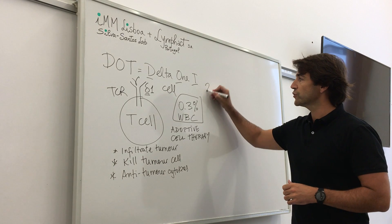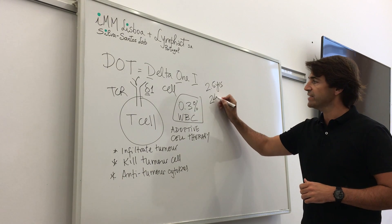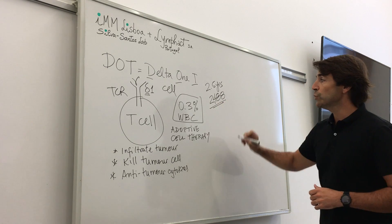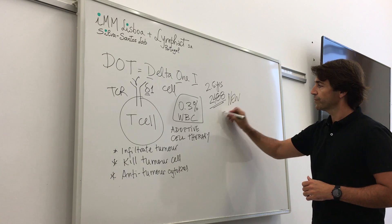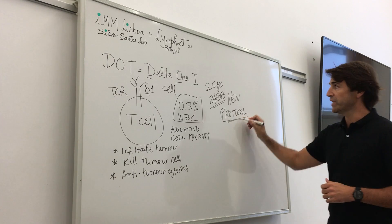And so what we've done for 2.5 years was to test 2,488 conditions to actually come up with a new protocol to expand and produce the billions of cells we need.